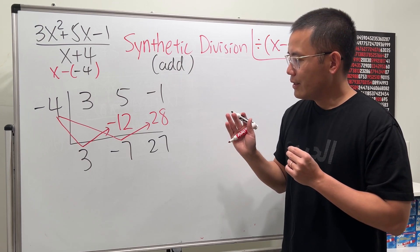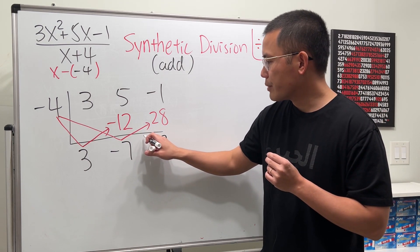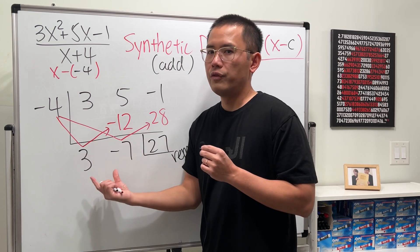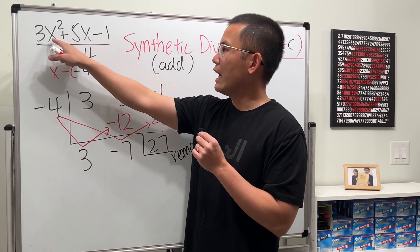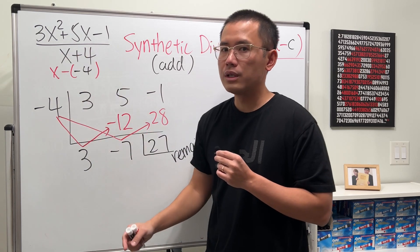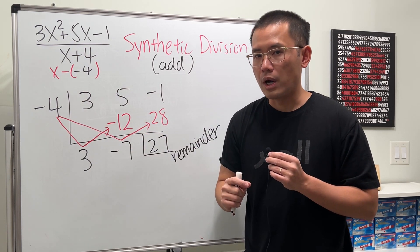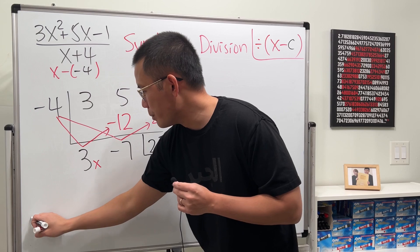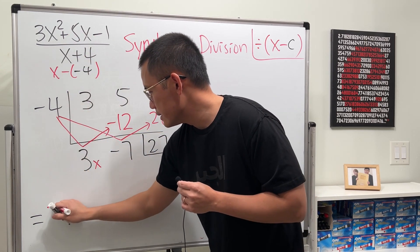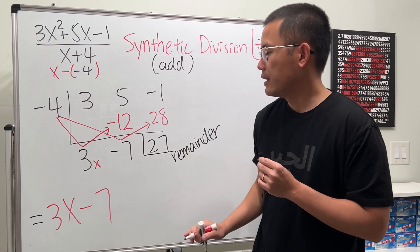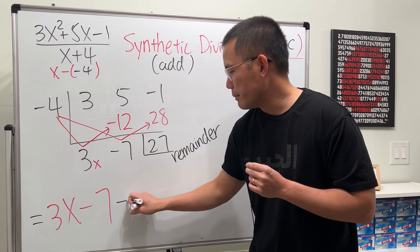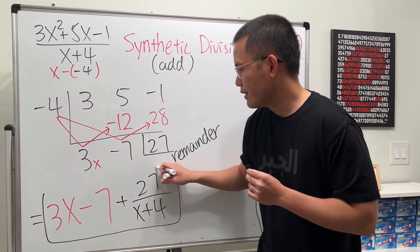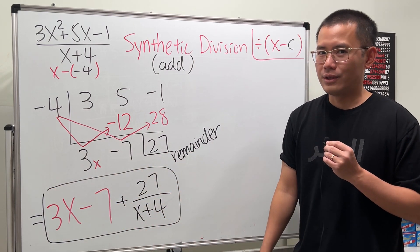But now you have to know how to read the answer from here. The last number here is the remainder. So let me just make a note right here. And then these two are the coefficients of the result. Now, originally we have x squared divided by x to the first power. So this right here, the power will go down by 1. So it will be x to the first power and then no x. So for the result, this right here will be 3x as the quotient minus 7. And then the remainder is 27. So we just say plus 27 over the original denominator, which is x plus 4. And that's the same answer as what we got from polynomial long division.